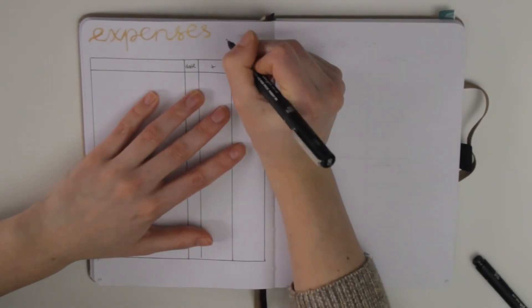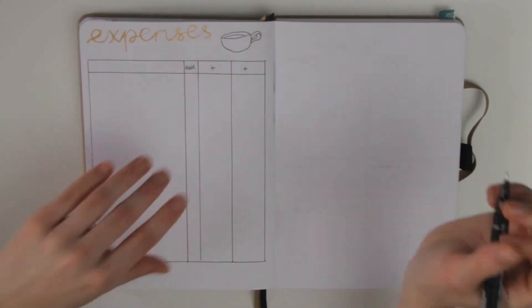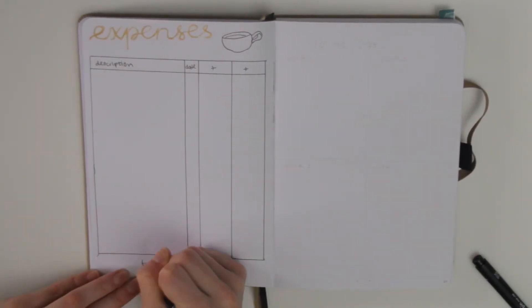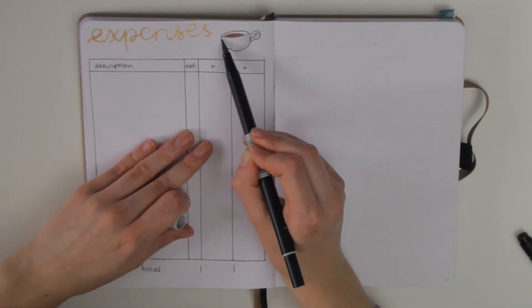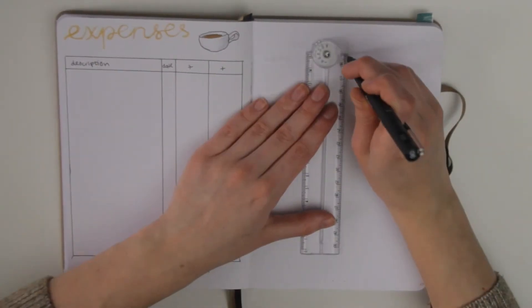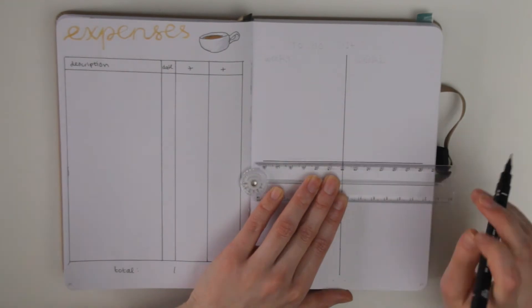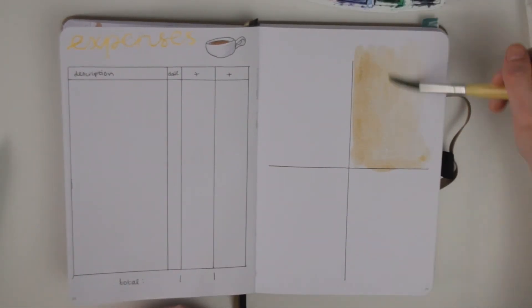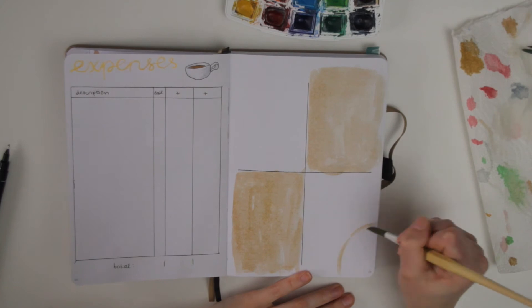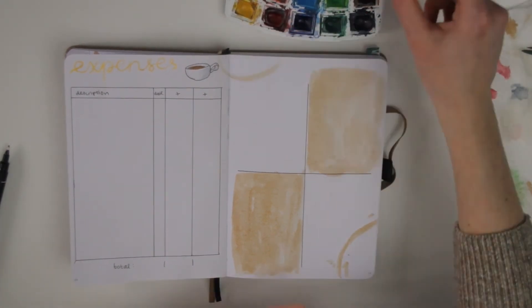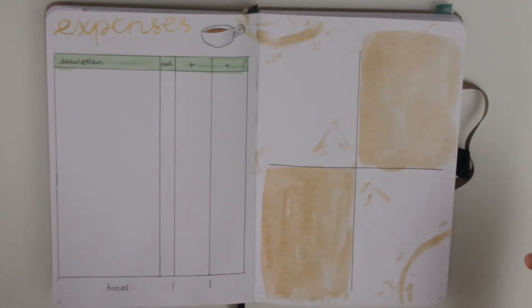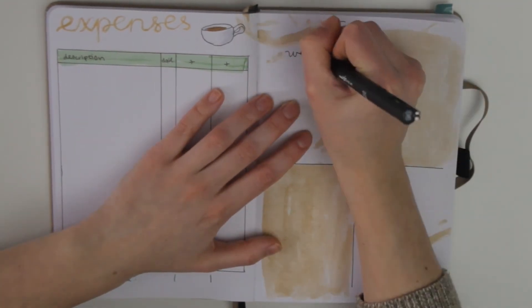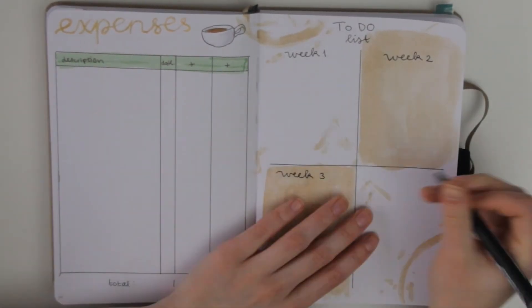I somehow managed to make two plus columns instead of a plus and a minus, which I didn't notice until actually editing this video. I did change it later on but sorry you're just gonna have to see those two pluses. Anyway, on the right there is a to-do list for the upcoming weeks. Normally I include those in the weeklies themselves but I wanted to make different kinds of weekly spreads than I normally do because I was just getting so tired of the same layout that I always do.